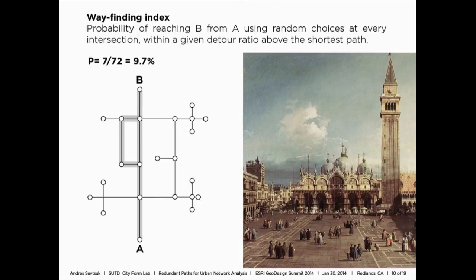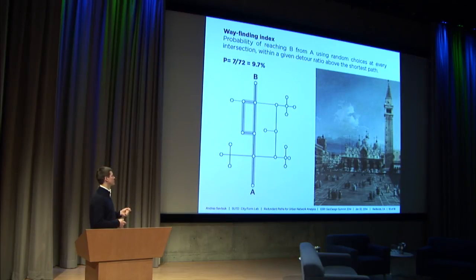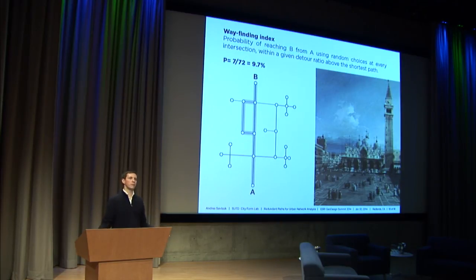The wayfinding index relies on redundant paths and computes the likelihood of finding a destination B from an origin A by taking completely random choices at every intersection along the way — a kind of tourist index. Using St. Mark's Square in Venice as an example, it assumes you're totally blind going from A to B and just turn in random directions, then computes the probability that you will reach B within a certain detour constraint. We think it can be used to study places in a city that are easiest to find for locating facilities, public monuments, and similar destinations.